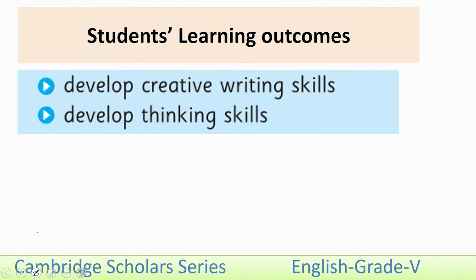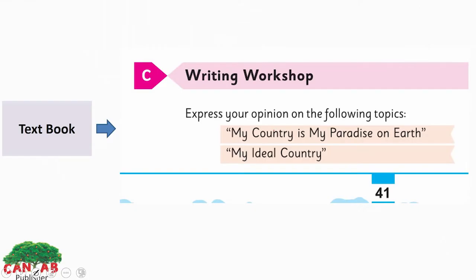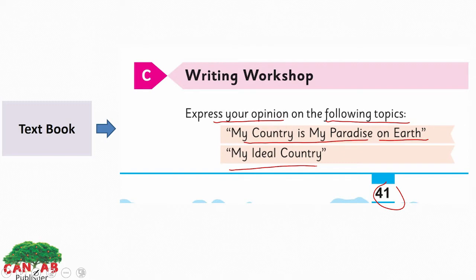The SLOs of this lesson are: develop creative writing skills and develop thinking skills. We have read Unit 5. Now this is a writing workshop, Section C. Here in your textbook, page number 41, express your opinion on the following topics: 'My Country is My Paradise on Earth' and 'My Ideal Country.'